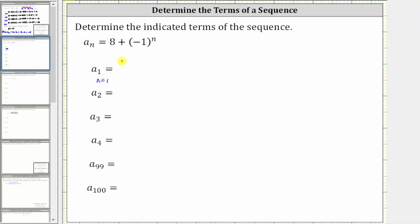Therefore, a sub one is equal to eight plus negative one in parentheses raised to the first power. Negative one to the first power is equal to negative one, so this simplifies to eight plus negative one, which is equal to seven.